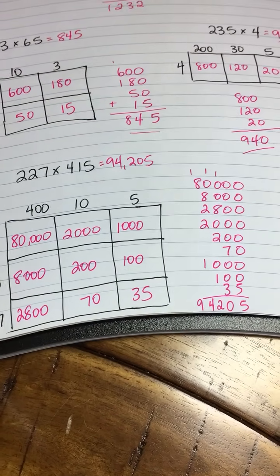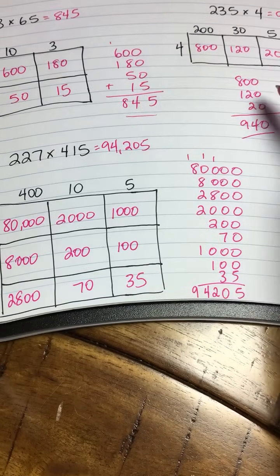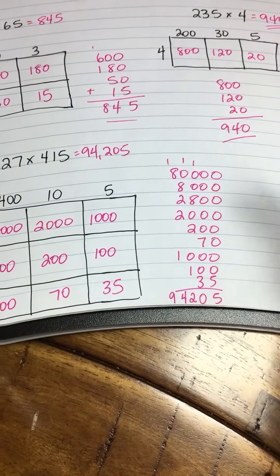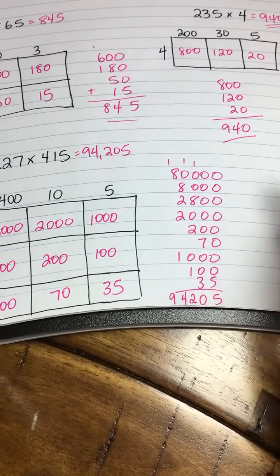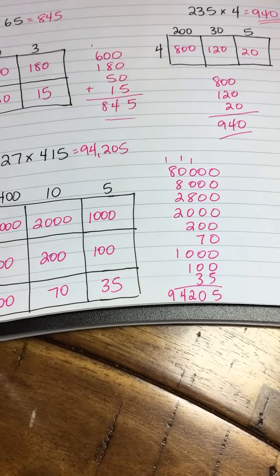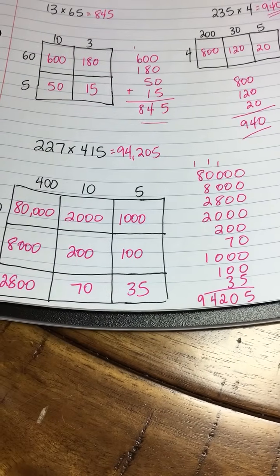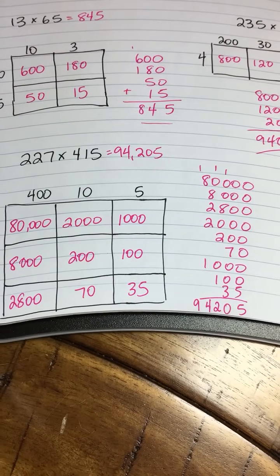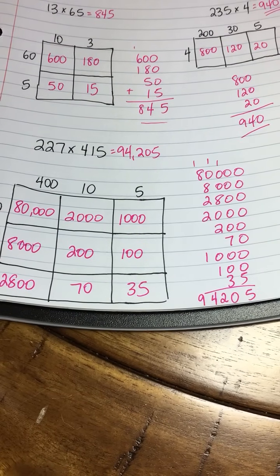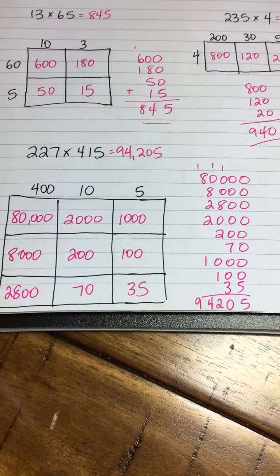You might want to move on to some other strategies when you get working with really big numbers, but for two digits times two digits or three times one, this is a really great strategy to use. If you are looking for other strategies for multi-digit multiplication, I have a few videos made. You can check out my blog at shelleygrayteaching.com or my YouTube channel. Thanks so much, have a wonderful day!